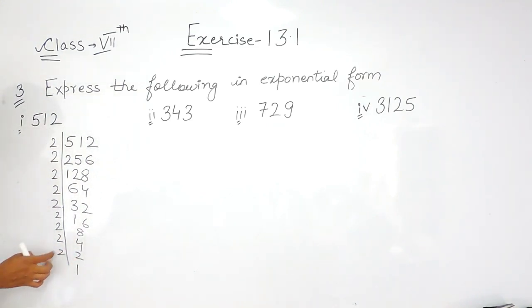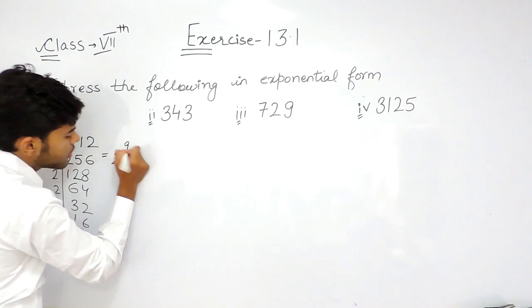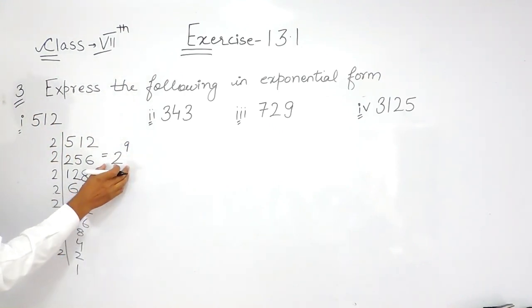So the number of 2's are 1, 2, 3, 4, 5, 6, 7, 8, 9. So we can write this as 2 to the power of 9, and this is our required answer.